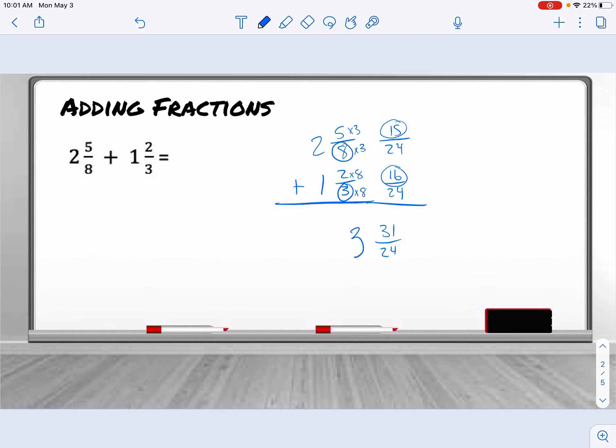But now this doesn't look very proper. So 31 out of 24, I need to convert to a mixed number. I need to find out how many times can 24 go into 31. It goes in there once. And when we subtract, there are 7 left. So that's 1 and 7 twenty-fourths plus the 3 we already had.